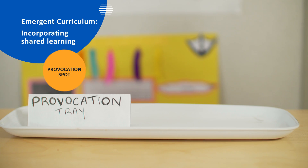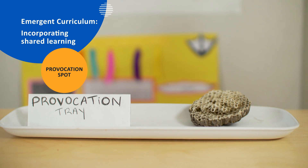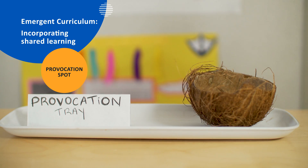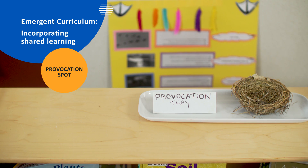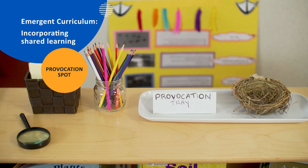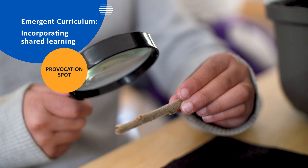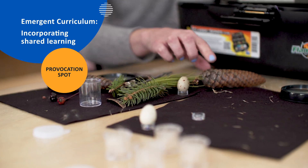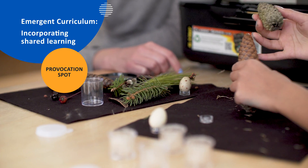An Emergent Curriculum approach is responsive to student interests. A dollar store tray and a variety of found objects can kindle student curiosity. Each week, a new object appears in the provocation spot. Students record their questions and wonderings about the object, and some questions present opportunities for research or hands-on exploration.